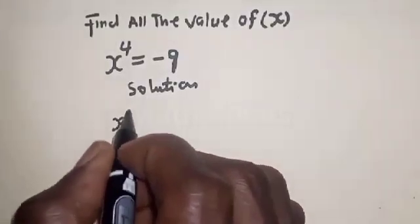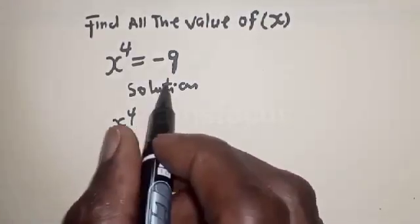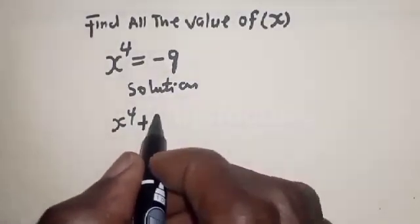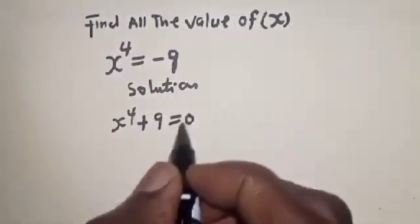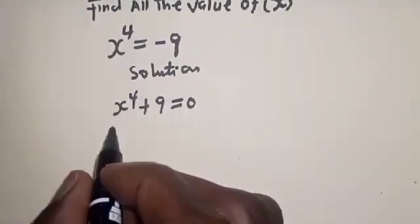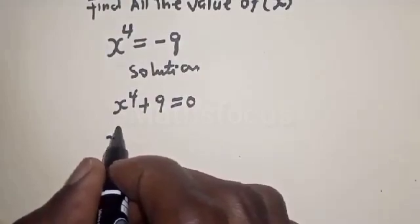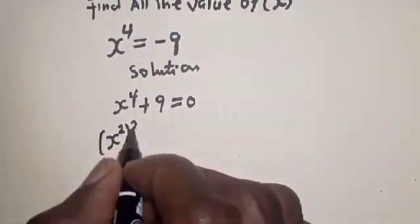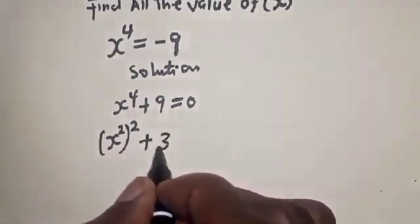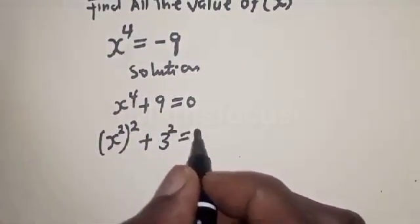We have x raised to the power 4. If minus 9 comes to the other side, it becomes plus 9 equal to 0. Now, x to the power 4 can be written as x-squared squared, and 9 can be written as 3-squared, so we have x-squared squared plus 3-squared equals 0.